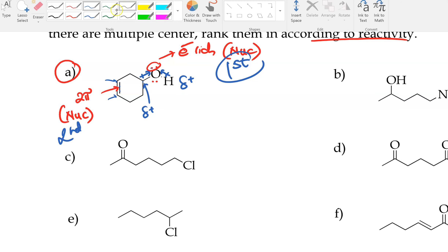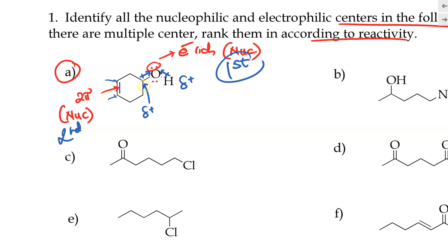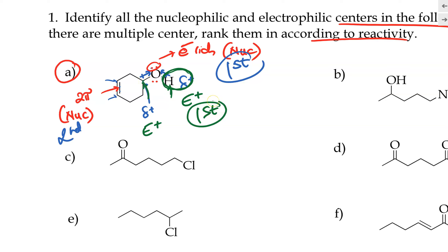For ranking the electrophiles, we have two electrophilic sites: the partially positive carbon and the partially positive hydrogen. Between them, the hydrogen would be the better electrophile. The reason is that hydrogen has only one electron — when bonded to oxygen and the oxygen pulls that electron away, the hydrogen has an exposed nucleus carrying essentially a full positive charge. This makes it much more positive than the carbon, making the hydrogen the strongest electrophilic site.